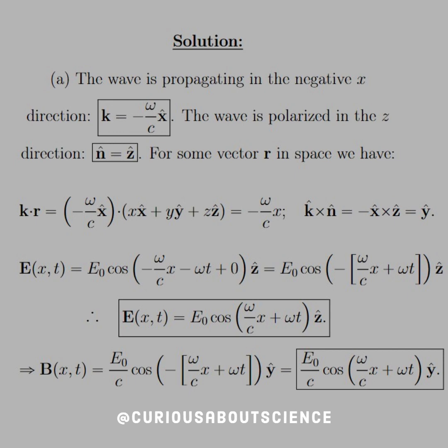And now the cross product, K hat cross N for the B field. Well, we see that K is equal to negative X hat. Since, again, we want the unit vector, we don't need the omega over C part there. But, with that, we get the negative X cross Z is equal to Y. And so we can construct the E and B fields pretty quickly from that. Once we do that, we see that we have E(x,t) is equal to E naught cosine omega X over C plus omega T. Again, cosine being an even function, we could factor out the negative and get rid of it.